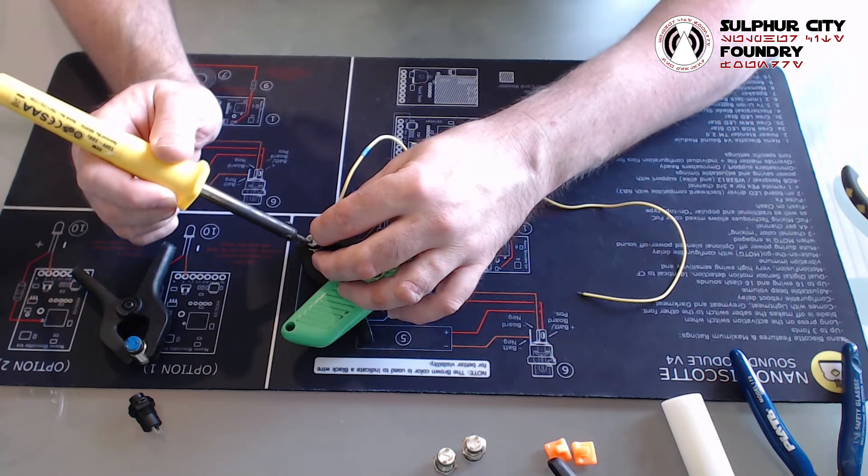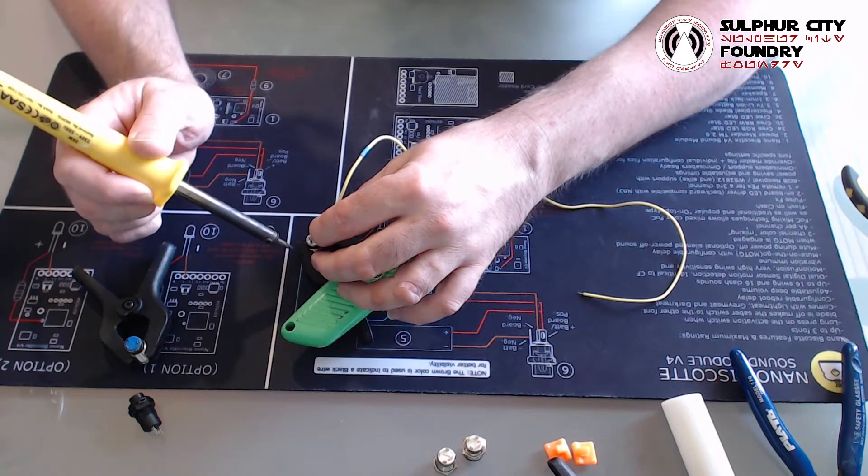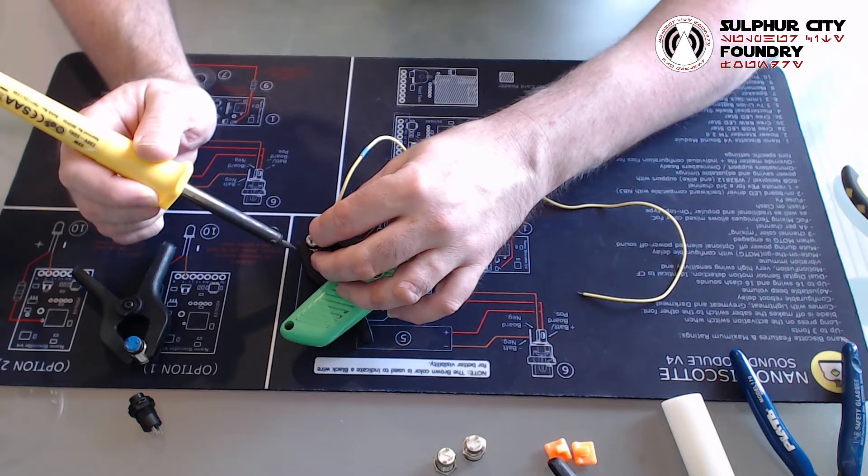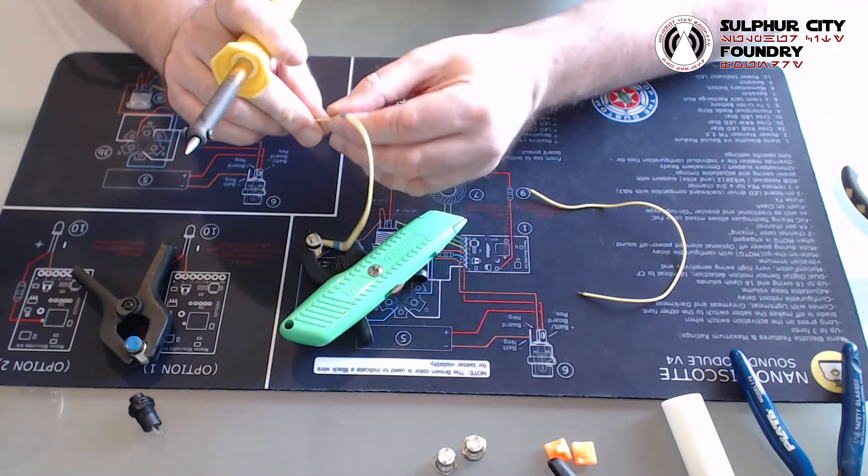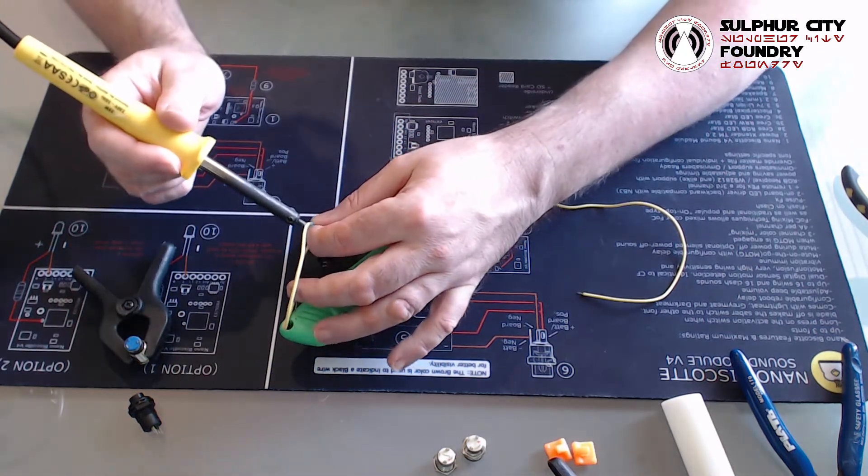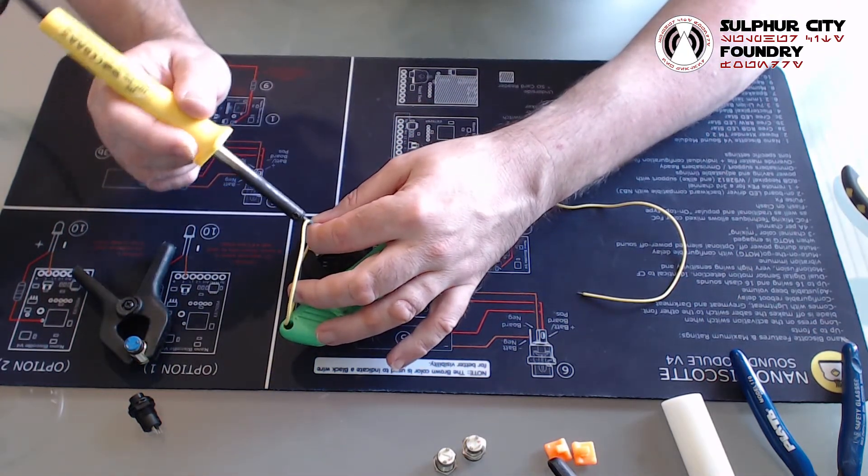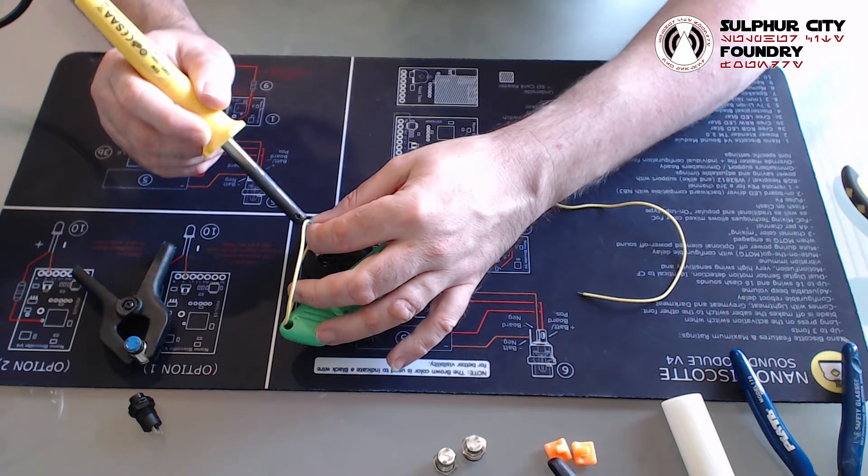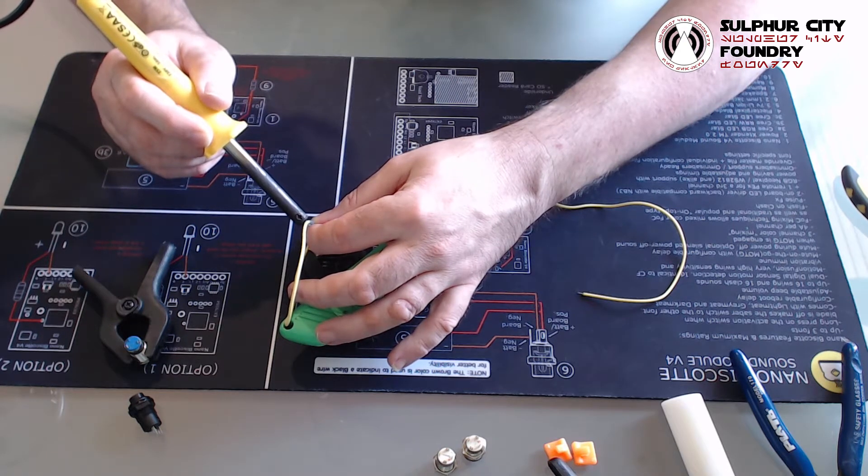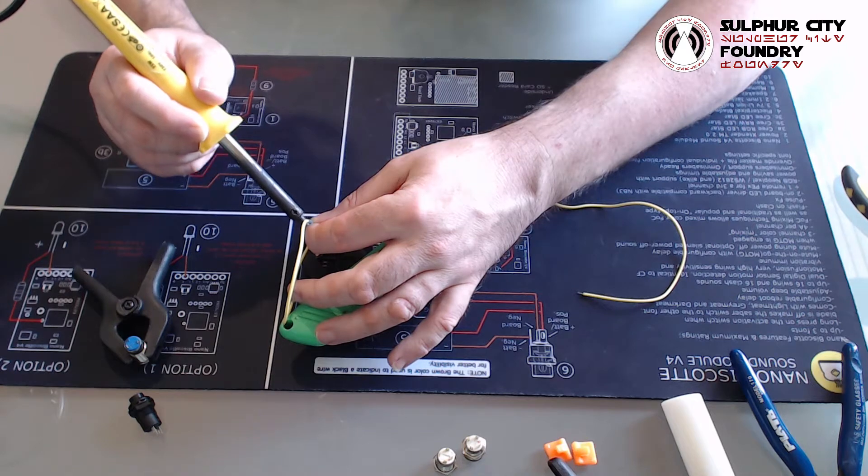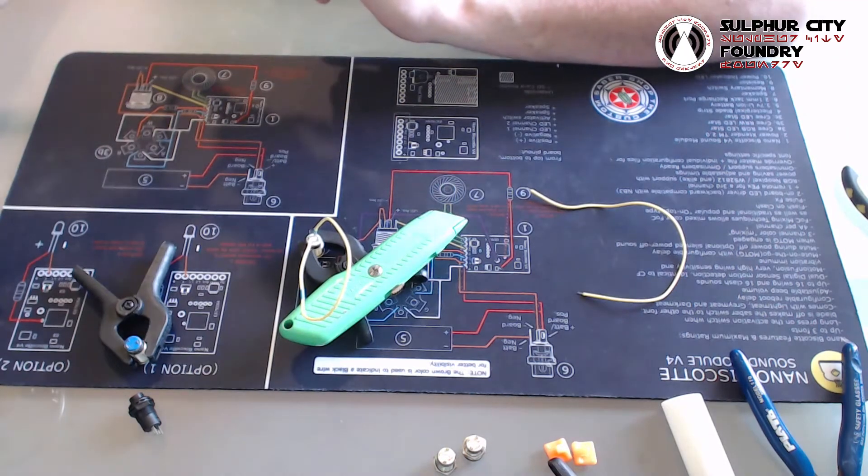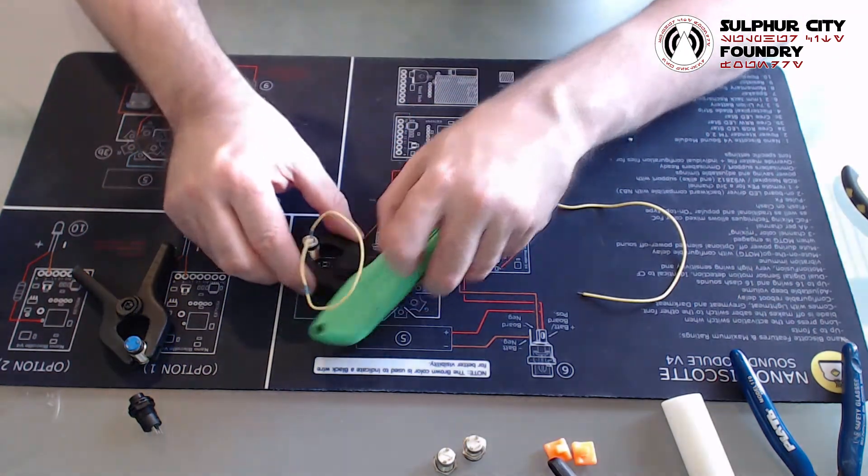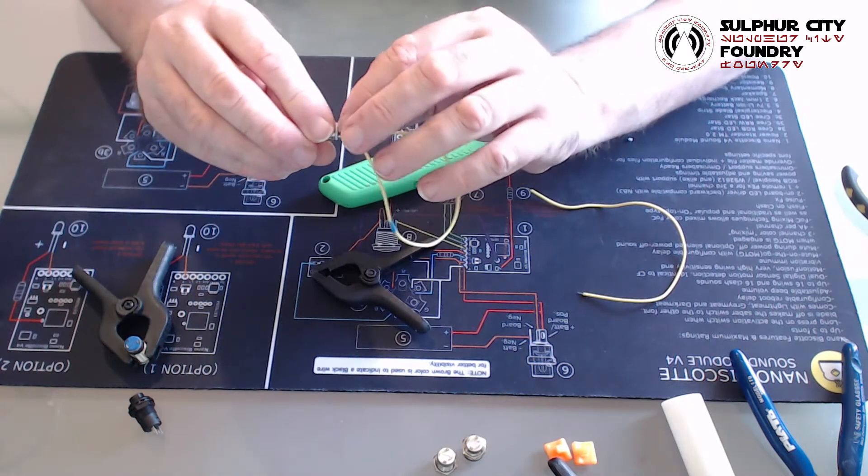You can use crocodile clips for this. I'm quite adept at doing this now so I tend to just do this by hand. If you've got shaky hands, a crocodile clip will make sure you get a nice solid joint. Okay, so what I've got there are a couple of cool joints on this.